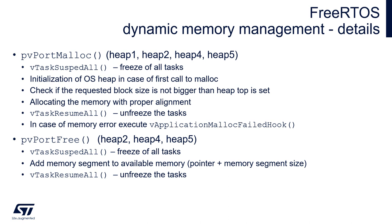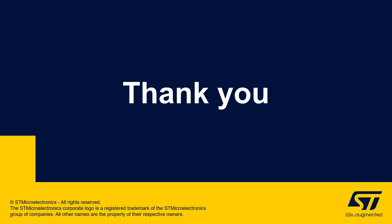vPortFree is present in heap2, heap4, and heap5. As heap1 does not allow memory release, it is not present there. The function starts by freezing all tasks, then adds the memory segment back to the available memory pool — and if the memory scheme allows concatenation of free areas, that is performed at this point. Finally, it unfreezes all tasks.